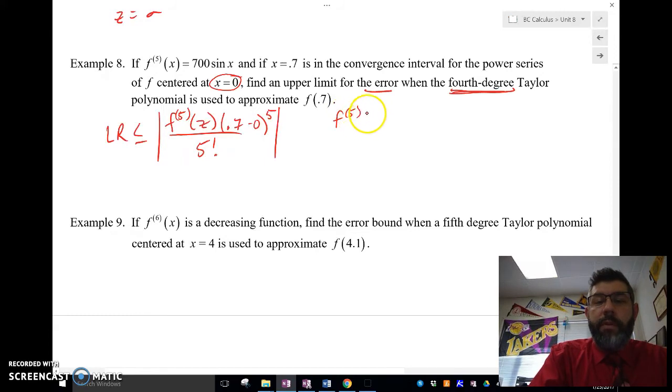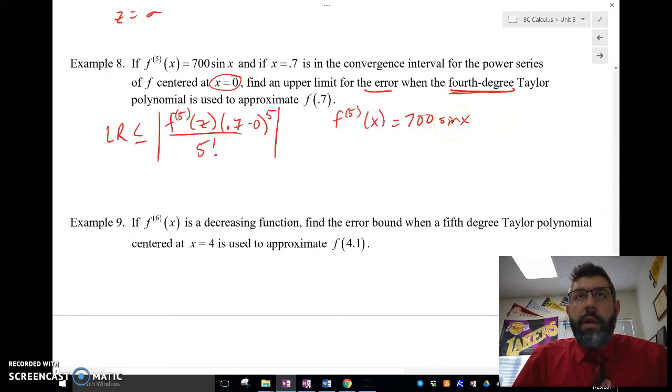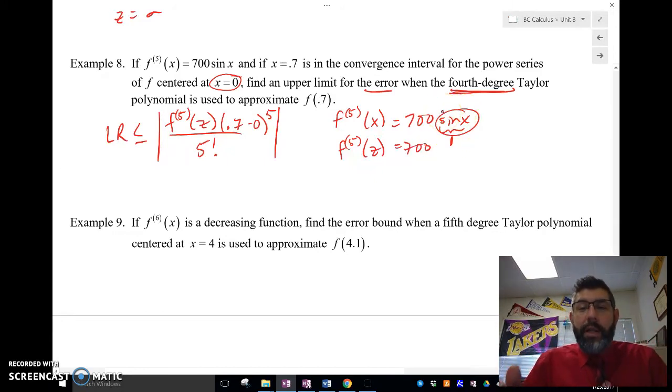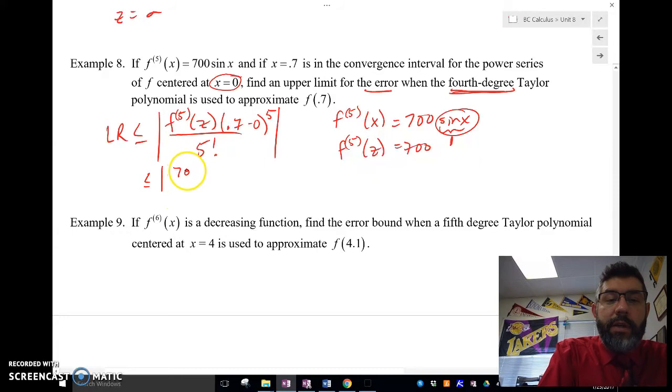So, now we've got to figure out what z is going to be. Well, what do we got here? We've got f5 derivative of x equals 700 sine x. So, what's the maximum I just talked about of sine? The maximum of sine is going to be 1. So, this maximum value is going to be 1. So, f5 of z, such that this is a maximum, is going to be 700. So, I don't actually need z in this case, because I know that sine x is going to be the biggest at 1. So, f5 of z, the biggest it's going to be, is 700. So, I can say that this Lagrange remainder is going to be 700 times 0.7 to the fifth over 5 factorial, which is going to be 0.9804.